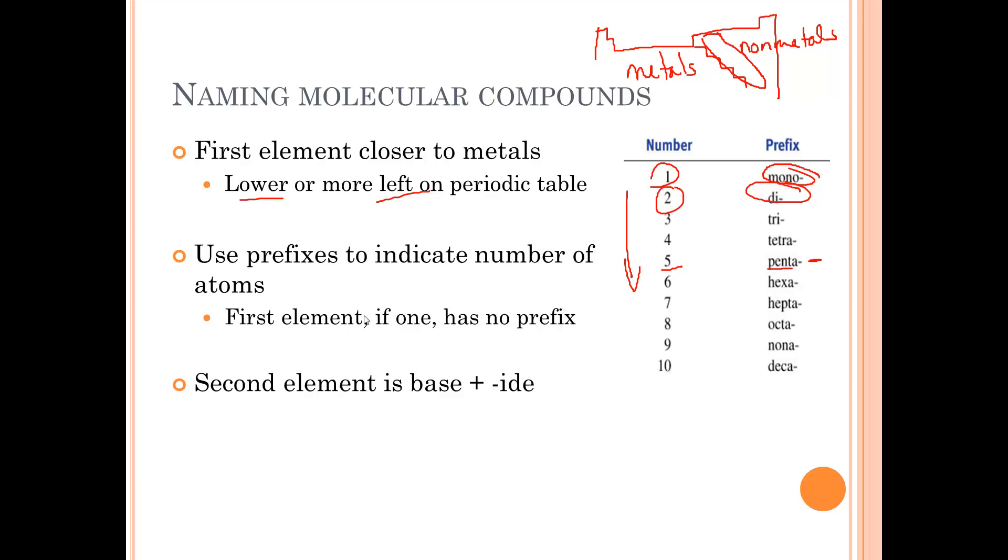The first element, and this is the only exception, if it's only one, it has no prefix. For instance, we saw before carbon monoxide or carbon dioxide. I said mono for the oxygen because it was the second element. I didn't say monocarbon for either of them because you don't say it if it's the first one. And the second one is the base word and it ends with -ide.